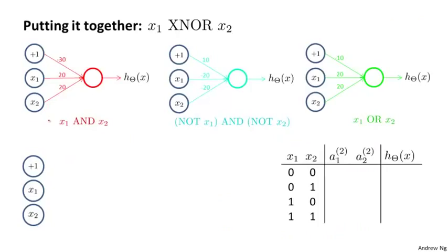Now taking the three pieces that we have put together, that is the network for computing x1 AND x2, the network for computing NOT x1 AND NOT x2, and one last network for computing x1 OR x2, we should be able to put these three pieces together to compute this x1 XNOR x2 function. And just to remind you, if this was x1, x2, this function that we want to compute would have negative examples here and here, and we'd have positive examples there and there. So clearly this will need a nonlinear decision boundary in order to separate the positive and negative examples.